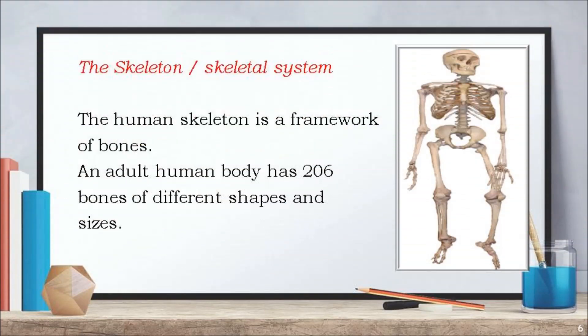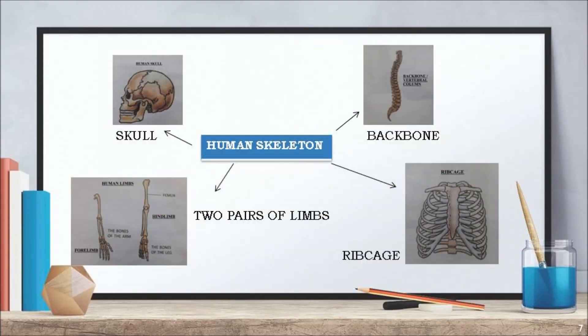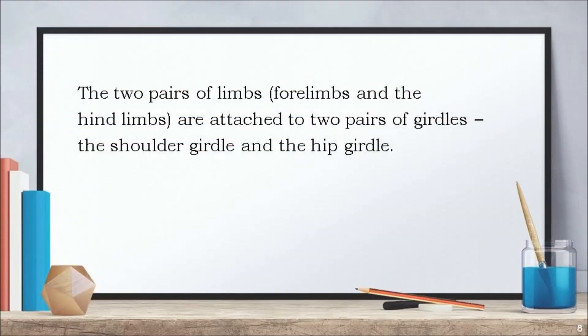The skeleton or the skeletal system. The human skeleton is a framework of bones. An adult human body has 206 bones of different shapes and sizes. The human skeleton consists of a skull, a backbone, a ribcage and two pairs of limbs. The forelimbs and the hind limbs are attached to two pairs of girdles, namely the shoulder girdle and the hip girdle.